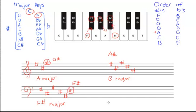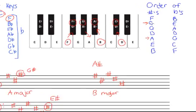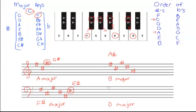Let's do one more example: D major. D major doesn't have a flat in it and it's not F or C, so it's a sharp key. Going down one semitone and one note name from D gives us C sharp as our last sharp. If C sharp is the last sharp, that means we're going to have two sharps: F and C. So Father Charles is the key signature for D major.